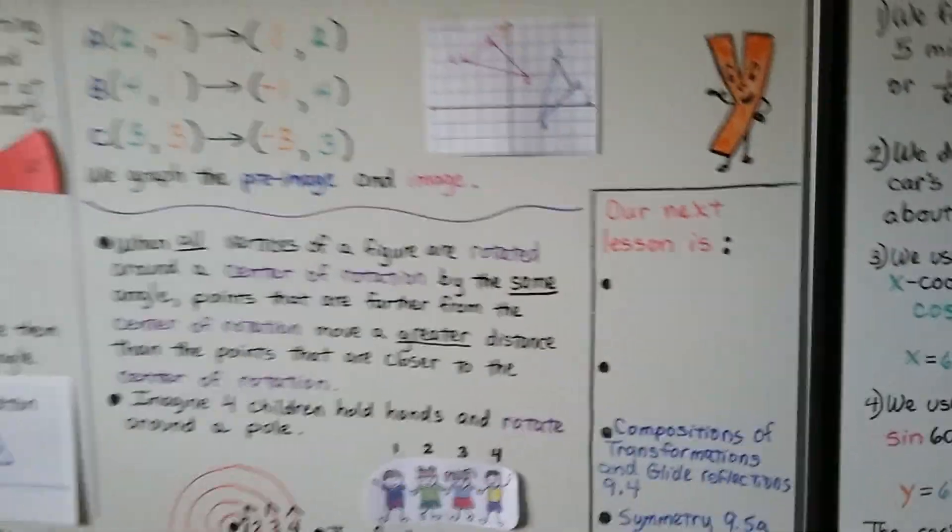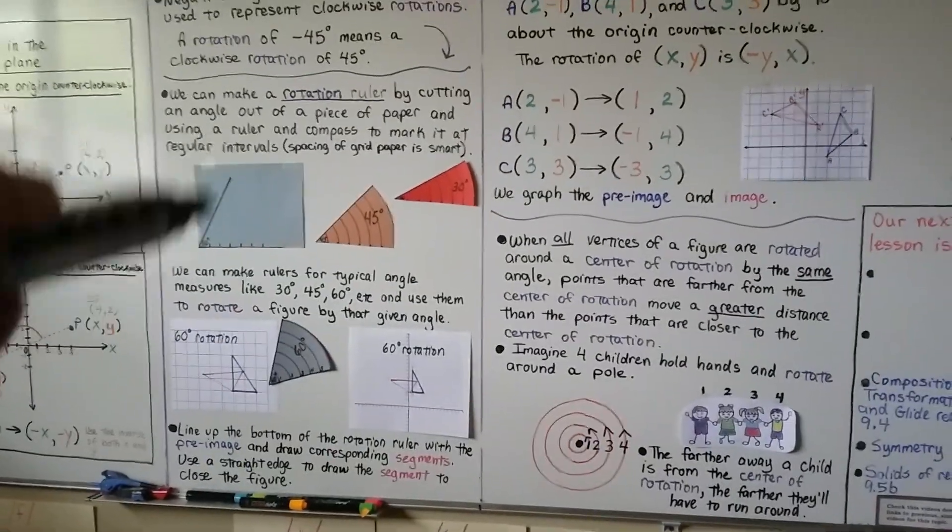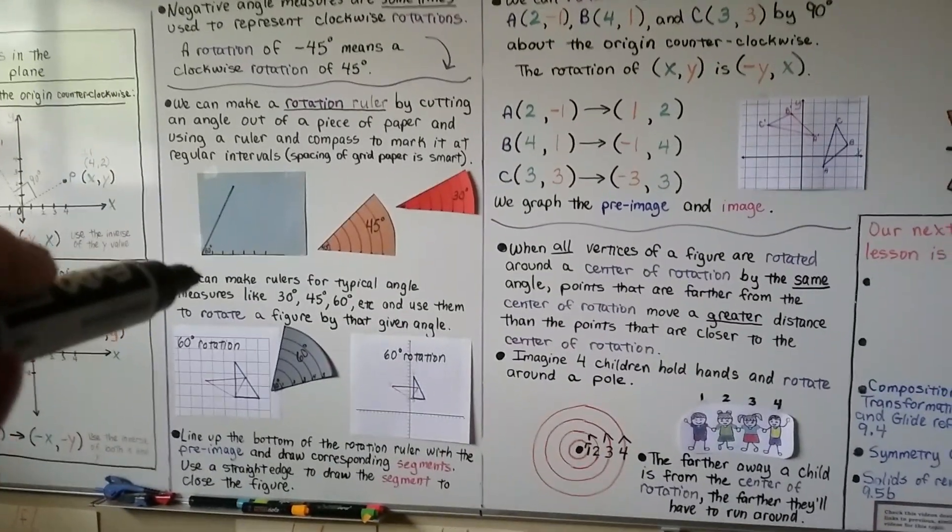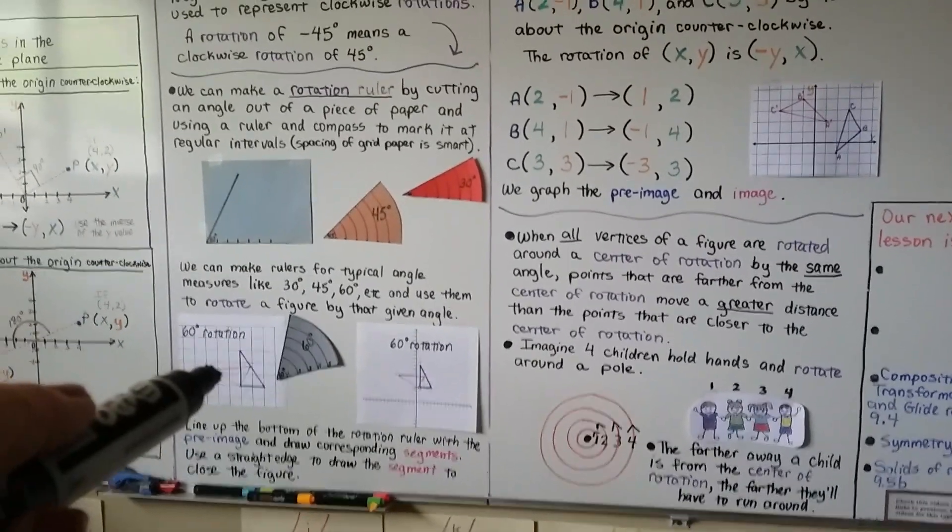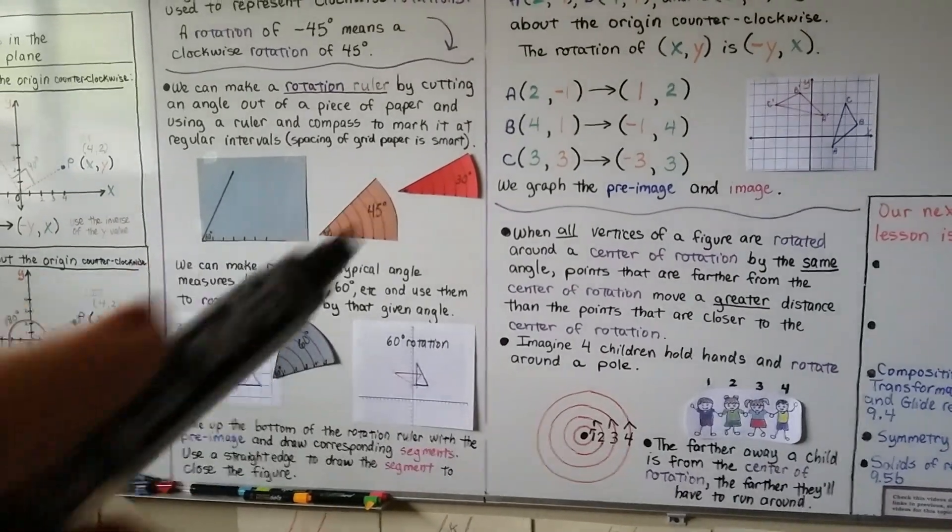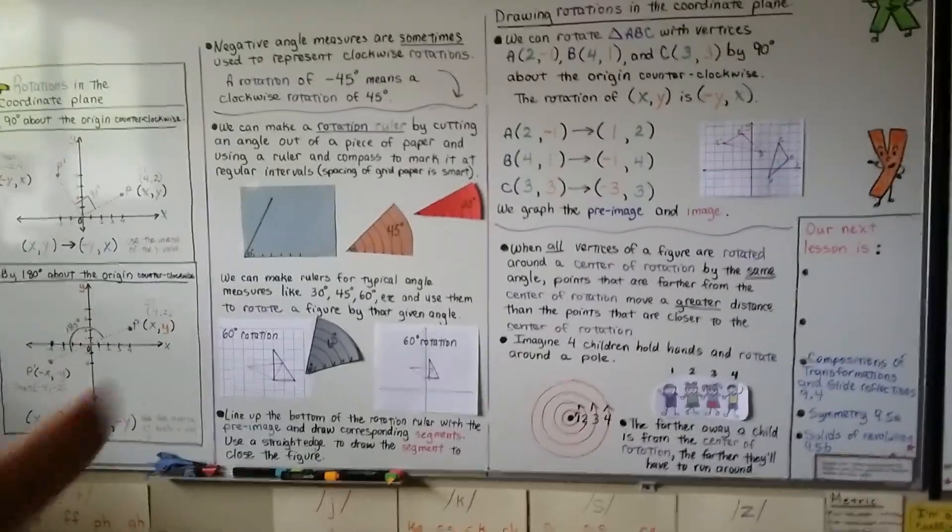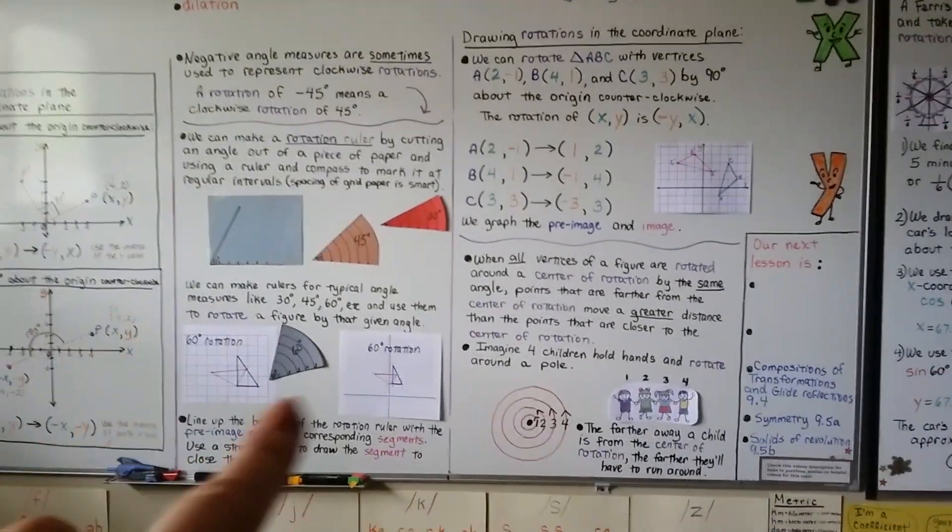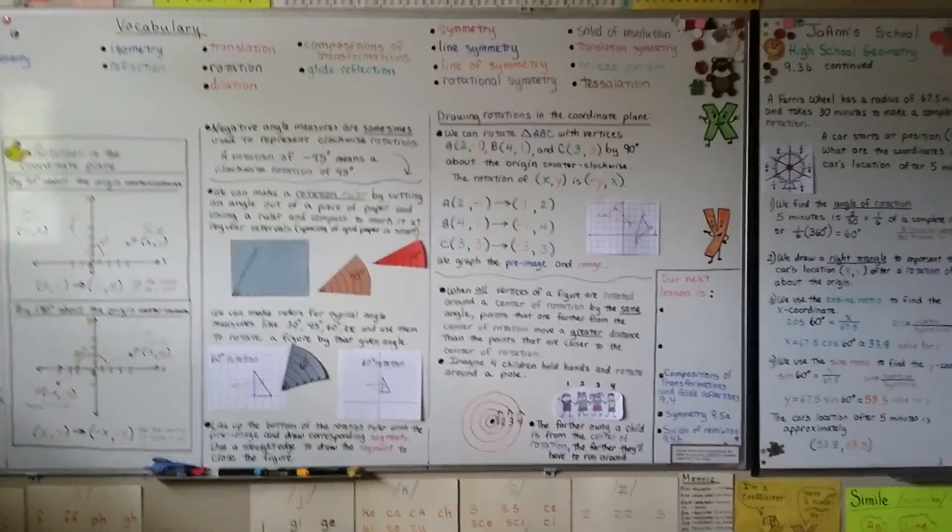So you can try making yourself a rotation ruler. Just make the angle on the corner of the paper. Mark it the same units as your graph paper that you use. Make the arcs and mark which measurement it is. And then you can use it to do rotations clockwise or counterclockwise.